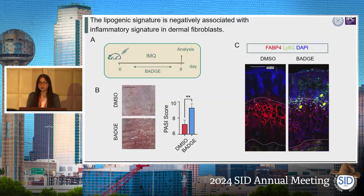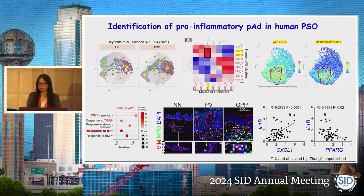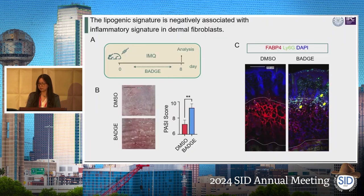During the inflammation resolution phase, we found that inhibition of adipogenesis by a PPARγ inhibitor — PPARγ being a key transcription factor for adipogenesis — blocked the formation of FABP4-positive adipocytes and prevented neutrophil clearance from the skin during the progression phase.